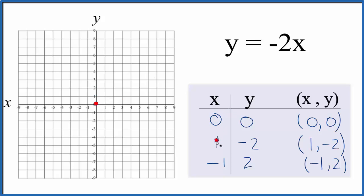Then we have x is 1 and y is minus 2. So x is 1 and then we go down 2. And the last one we have x is negative 1 and y is positive 2. So we go over and up 2 and there's our line.